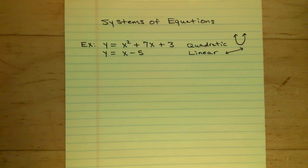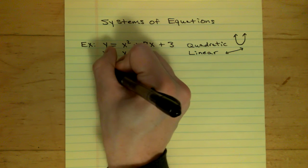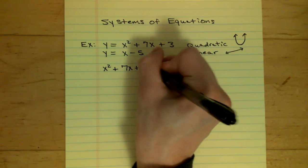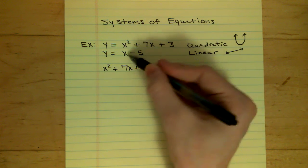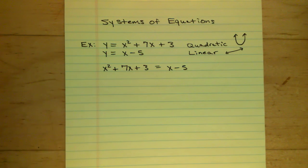So what we can do is find the solutions to the system by setting the y's equal to each other. What I always do is put the quadratic equation on the left side and the linear equation on the right side. So I'm going to take x squared plus 7x plus 3 on the left side, and x minus 5 on the right side. That's how you set it up.